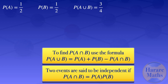When we rearrange that equation and put the probability of A intersection B on the left-hand side and the probability of A union B on the right-hand side, we get: the probability of A intersection B is equal to the probability of A plus the probability of B minus the probability of A union B.